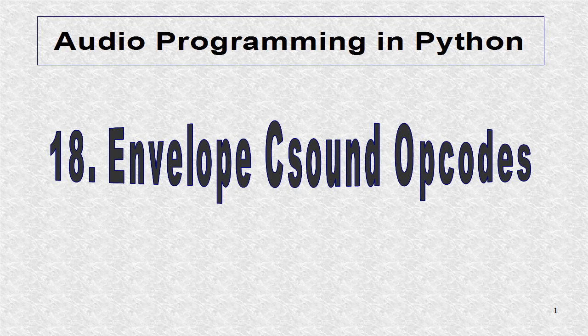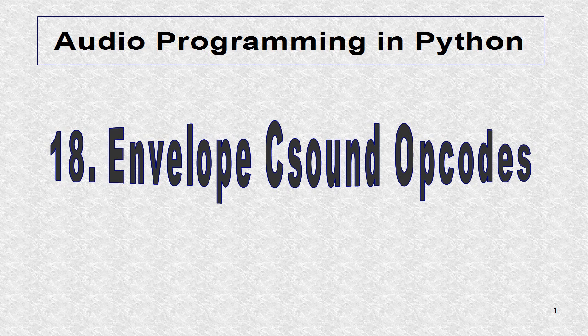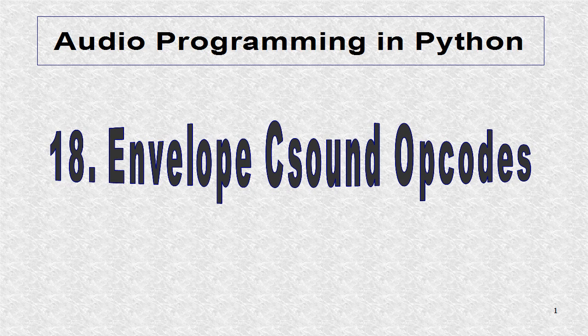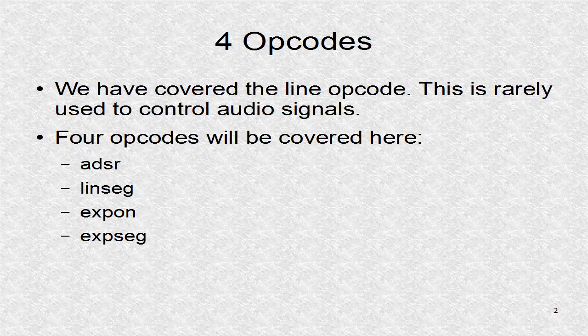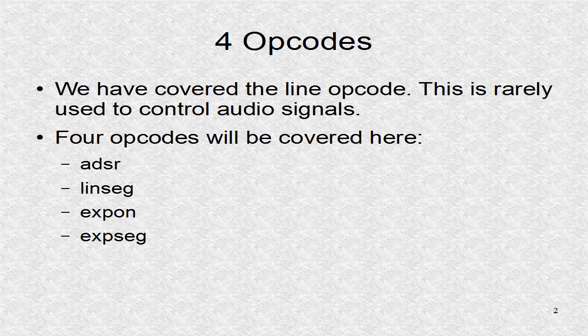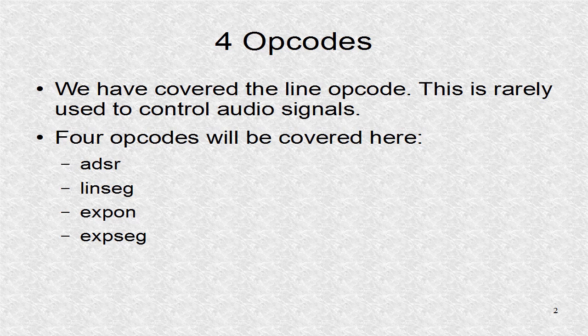Four different envelope opcodes are covered. Envelopes are used to control an audio signal. A basic use is in controlling the amplitude of an audio event over its duration. These are the four opcodes that will be covered. CSound has many more, but these are enough. If you need a more complex envelope, you should use a table, a topic explored in the next tutorial.